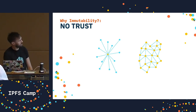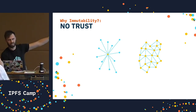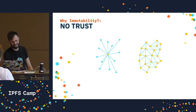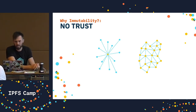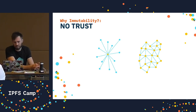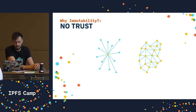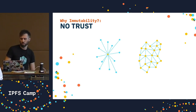In a peer-to-peer network, there's no central point of authority, no one to implicitly trust. But in the web of today, we implicitly trust things like institutions — certificate authorities, social media, government.